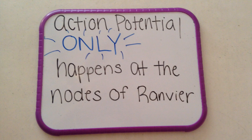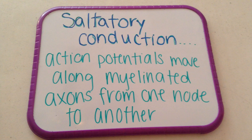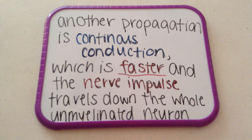Action potential generation only happens at the nodes of Ranvier. This continues to happen all along the axon and only at the nodes. This propagation is known as saltatory conduction, which means action potentials move along myelinated axons from one node of Ranvier to another. Another propagation is continuous conduction, which is faster and the nerve impulse travels down the whole unmyelinated neuron.